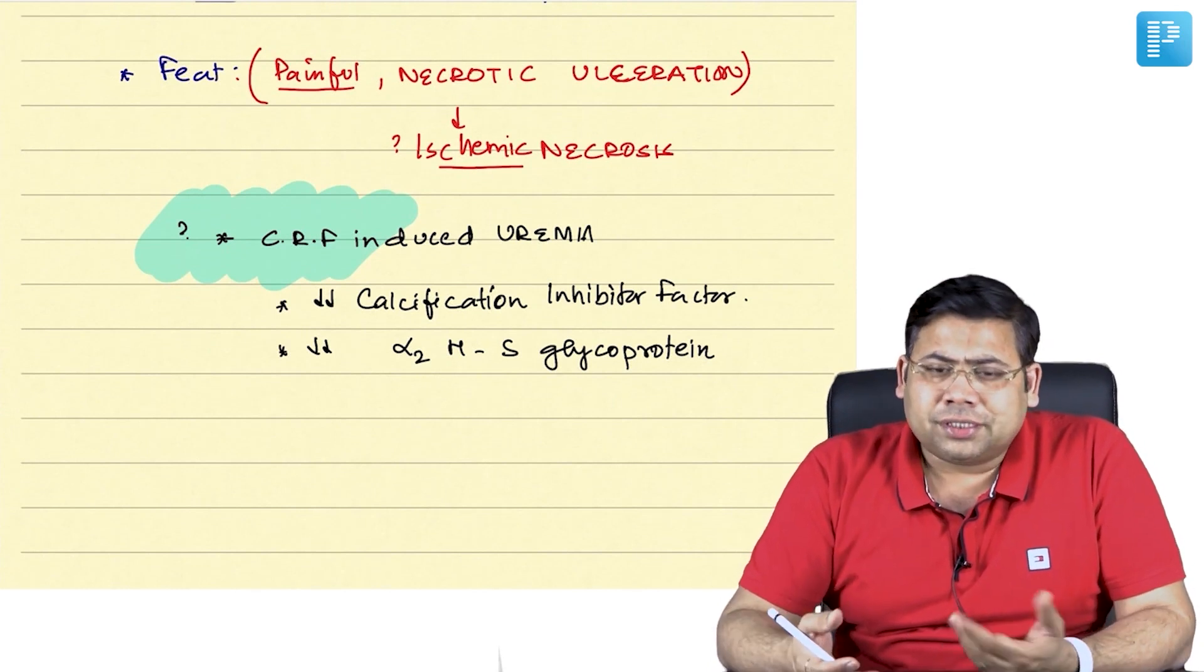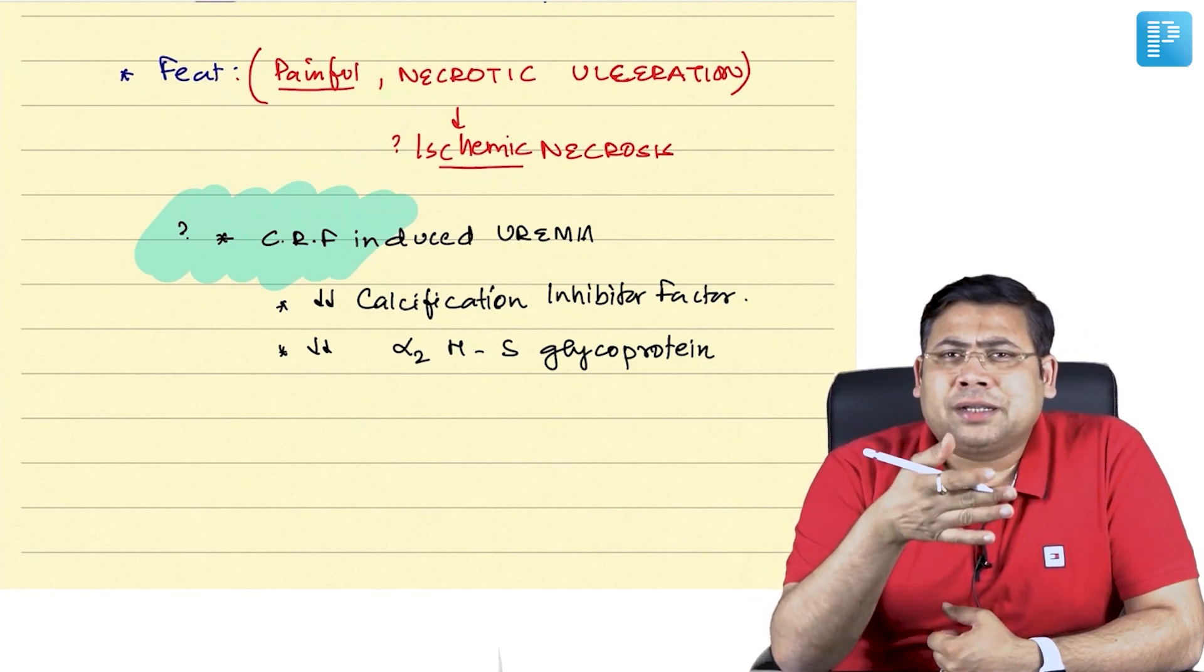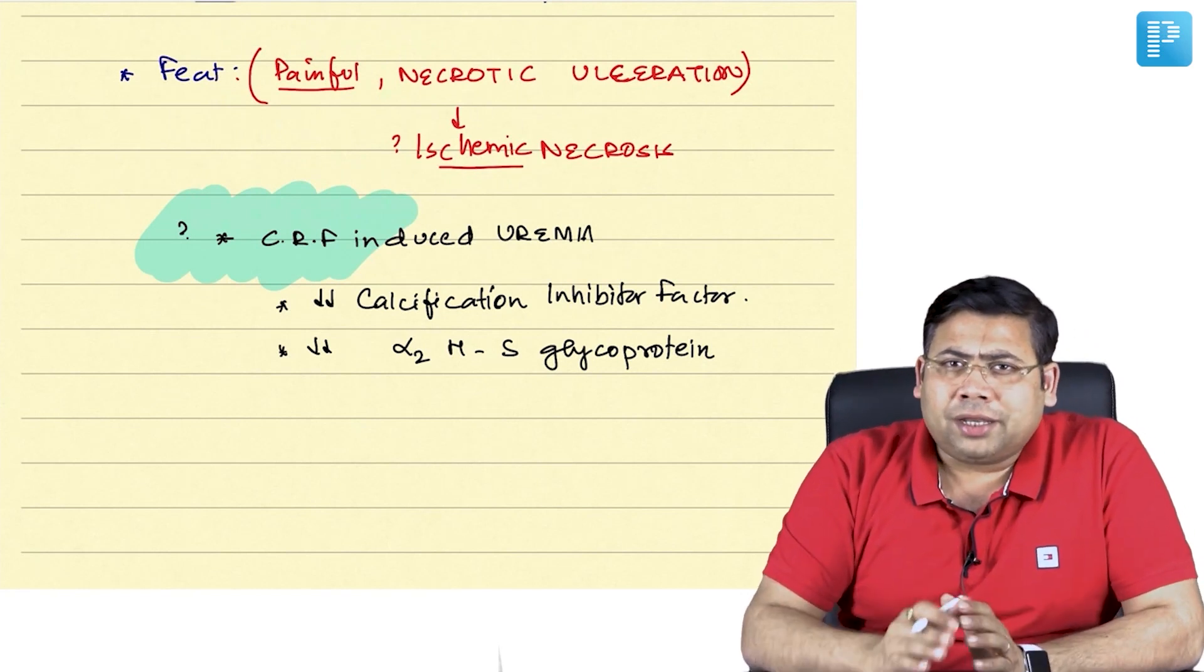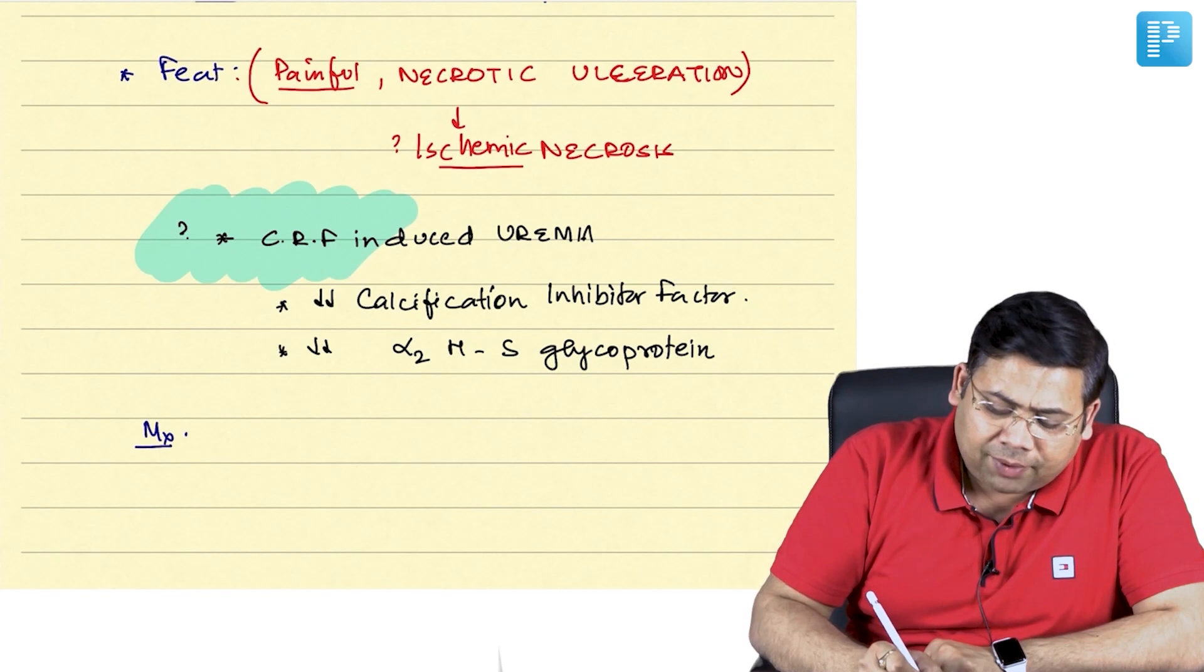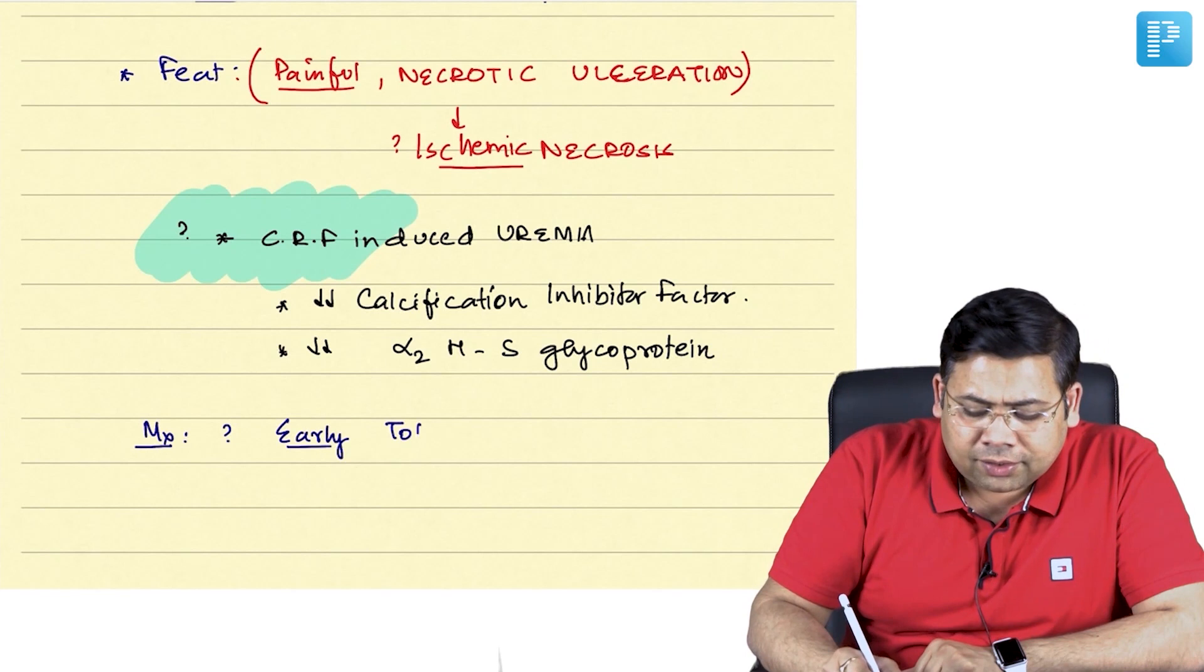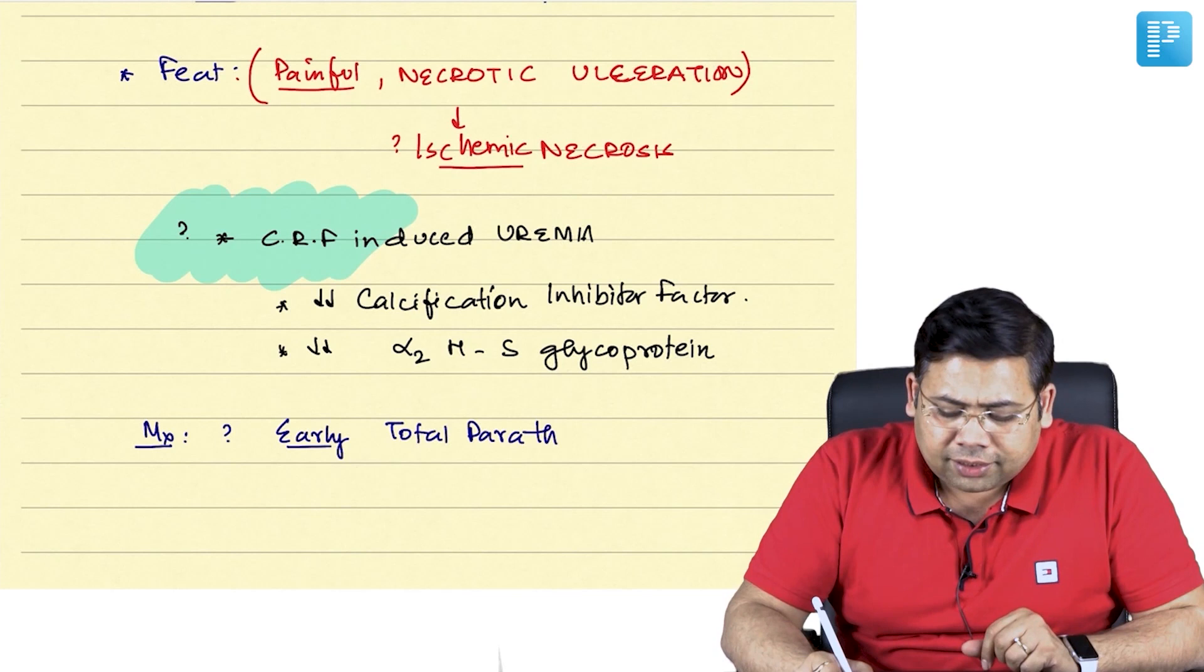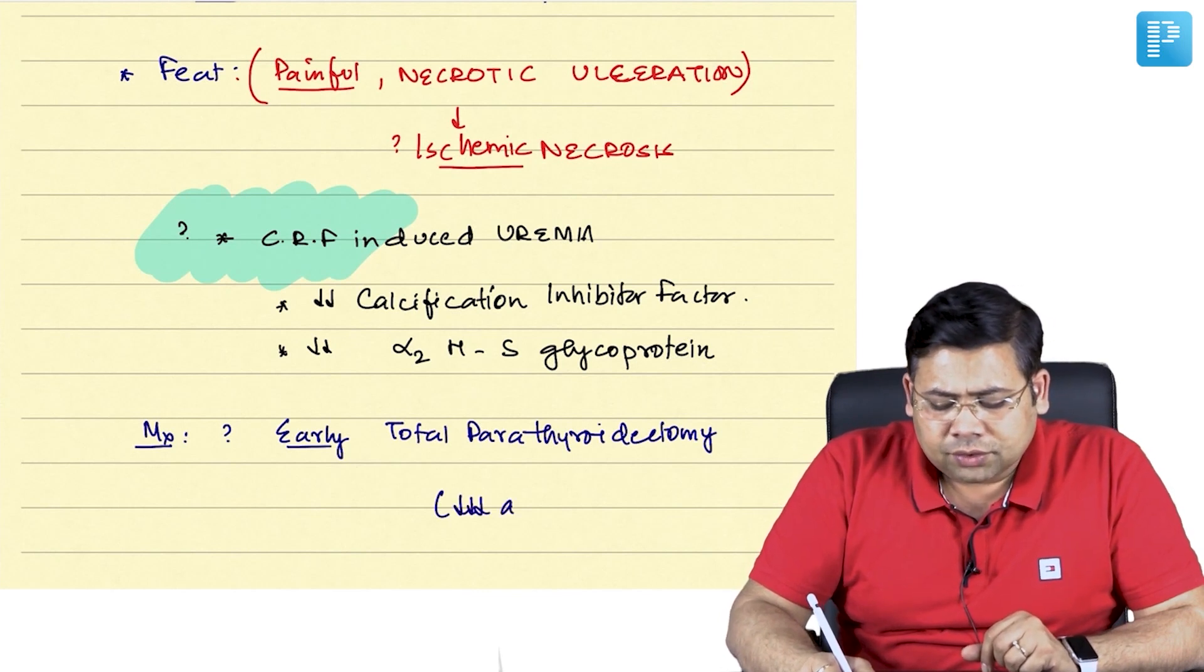And then the result is, the end result is because of this ischemic necrosis, there is a superseded risk of sepsis and hence the mortality. Mortality is very high. And what is the management? The management is early total parathyroidectomy, so that you control this scenario which is going on. It has been seen that early parathyroidectomy reduces the incidence of amputations.